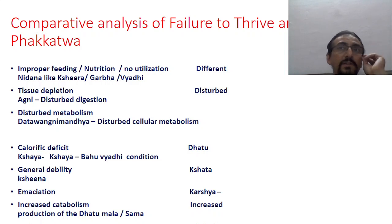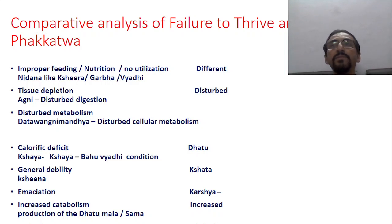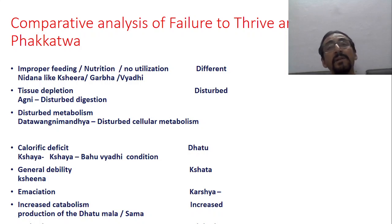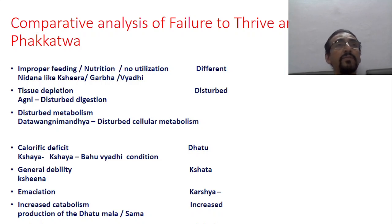If you look into the big list of FTT, there are issues related to feeding and nutrition: caloric insufficiency, over-utilization of calories, no utilization. Then different disorders, pregnancy-related causes, endocrine causes, and metabolic causes — everything is explained in FTT also.